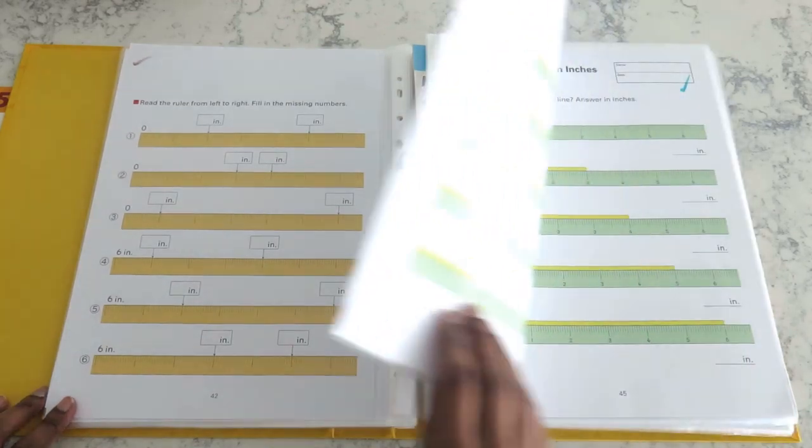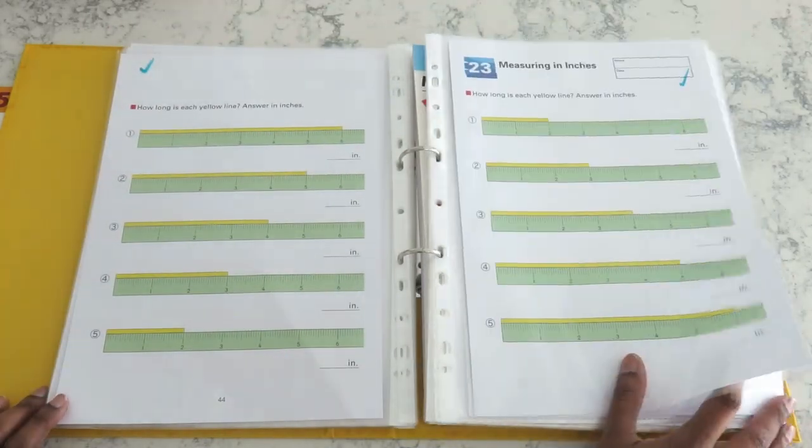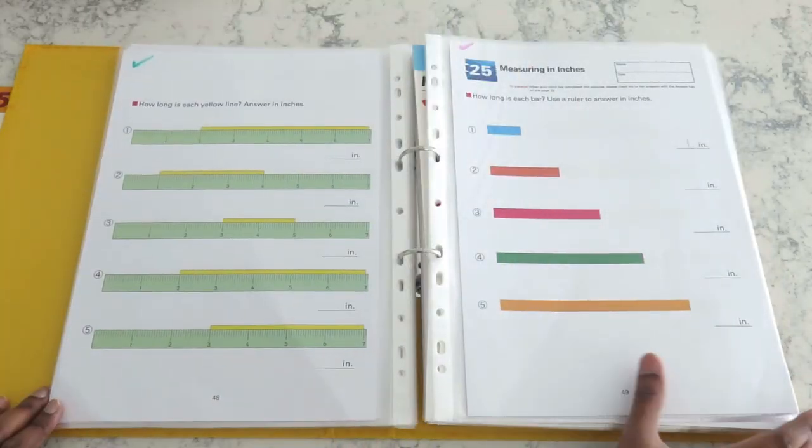These three books are from the My Book of Measurement series and they cover length, volume and weight. And if you have young children, these are some great workbooks to try out.